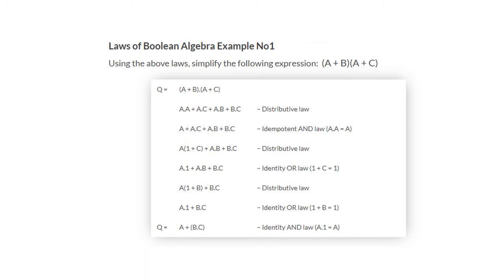Using the above law, simplify the expression (a OR b) AND (a OR c). Applying the distributive law, the expression expands as (a AND a) OR (a AND c) OR (a AND b) OR (b AND c). Since a AND a equals a by the idempotent AND law, this becomes a OR (a AND c) OR (a AND b) OR (b AND c). Taking a outside the first two terms: a AND (1 OR c) OR (a AND b) OR (b AND c). Since 1 OR c equals 1 by the identity OR law, this simplifies to a OR (a AND b) OR (b AND c).